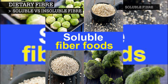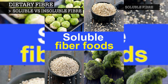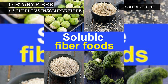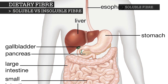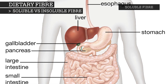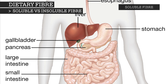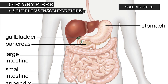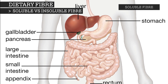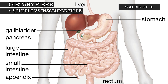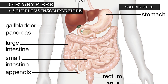Soluble fibre swells up with water in the stomach, partially dissolving within it to form a thick gel-like substance, which slows down digestion and stays in the stomach longer, leaving you with an extended feeling of fullness. This gel-like substance later gets broken down by bacteria in the large intestine in a process called fermentation, which ends up providing a small amount of calories.